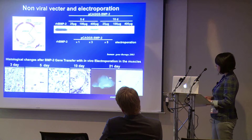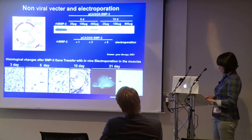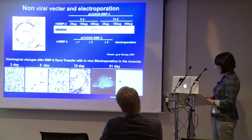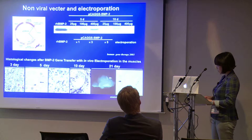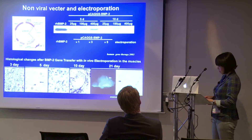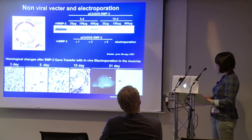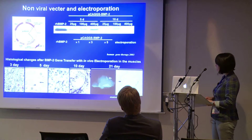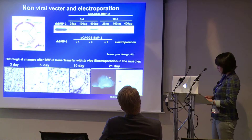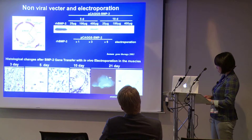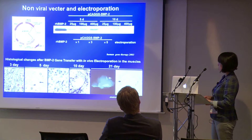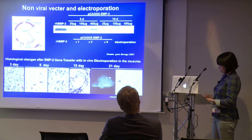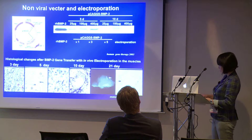We constructed the pCAGGS-BMP2 vector. The pCAGGS vector has a CAG promoter which shows high potential for gene expression. In this study, plasmid dose ranged from 25 micrograms to 400 micrograms, and electroporation was repeated one to five sessions at intervals of 24 hours to identify transgene expression after transcutaneous electroporation.